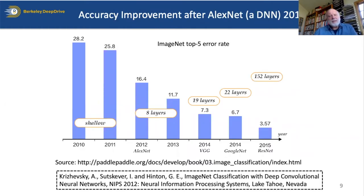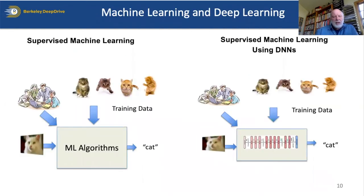But in 2012, something very significant happened. The y-axis shows the top-five error rate on the standard image classification benchmark known as ImageNet, and what we see is a very dramatic reduction in error rate in a single year, due to the use of a deep neural net called AlexNet. I want to contrast this use of a deep neural net with supervised machine learning—in general structure they're very similar, but at the core of deep learning is the use of a deep neural net.